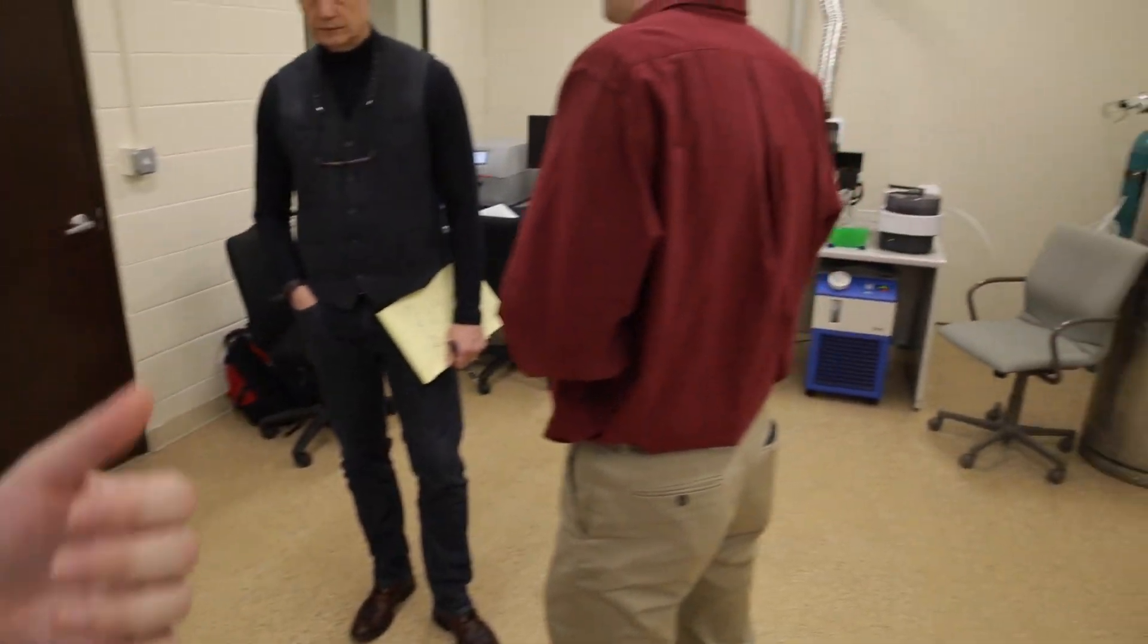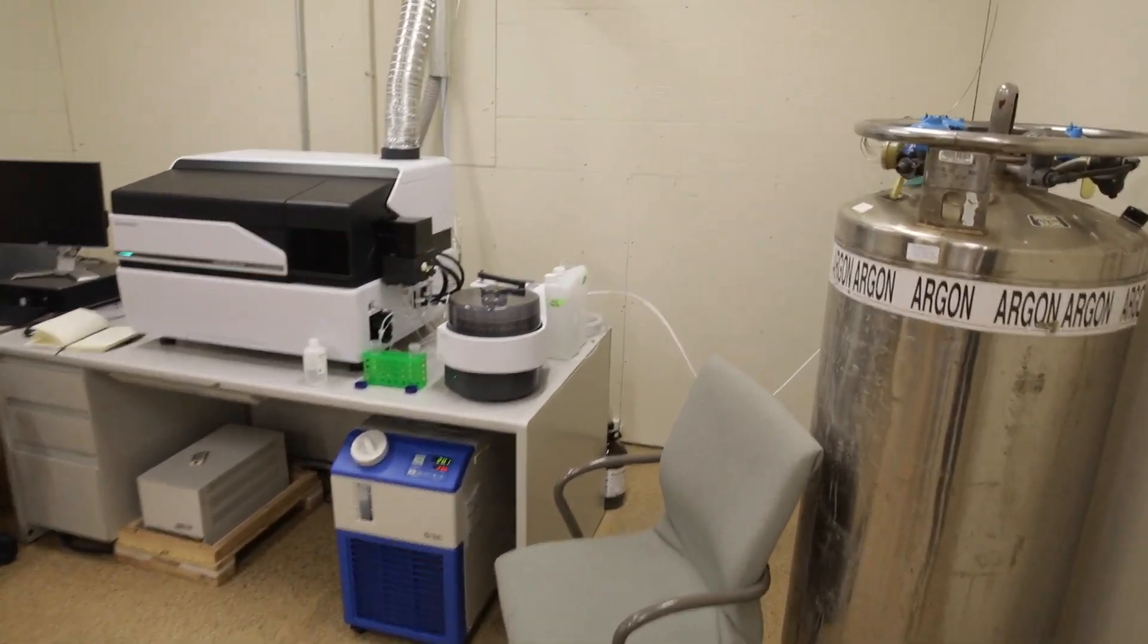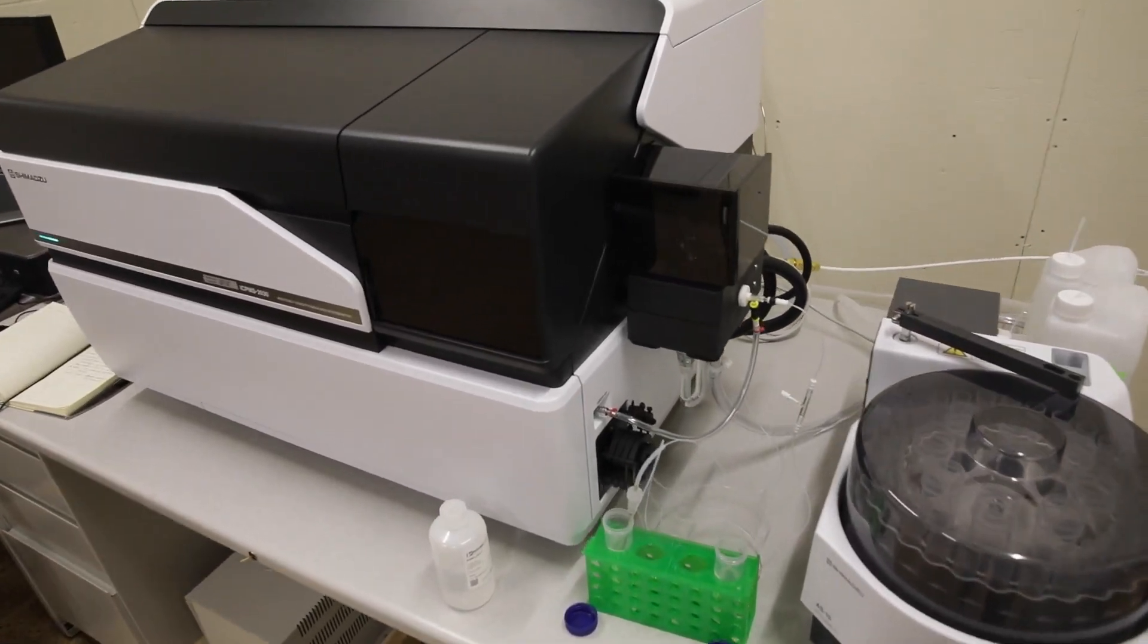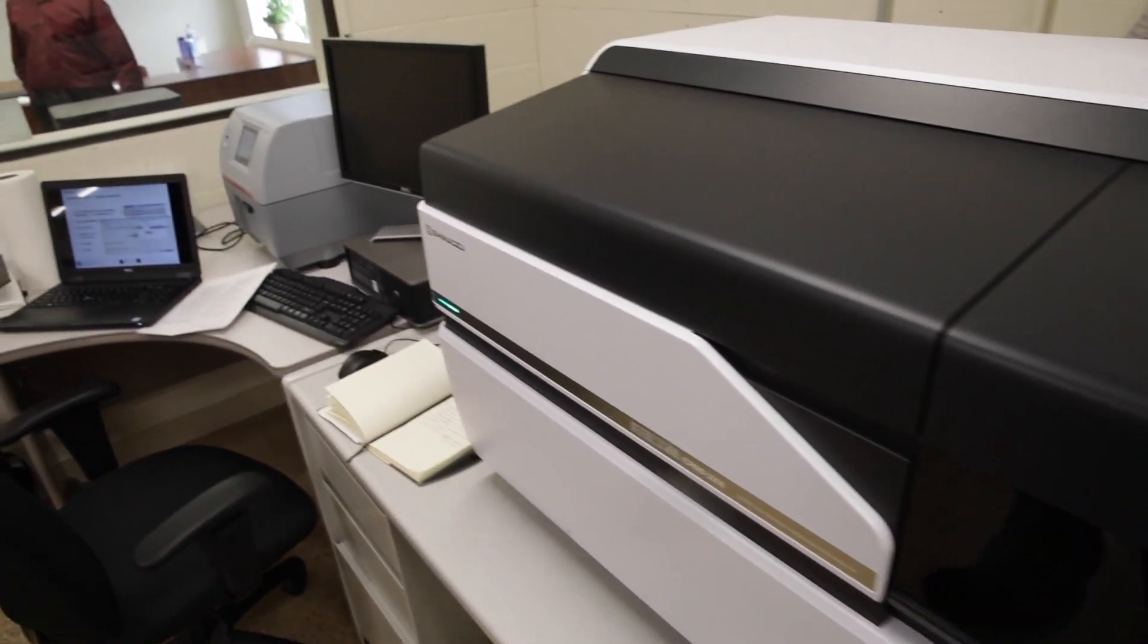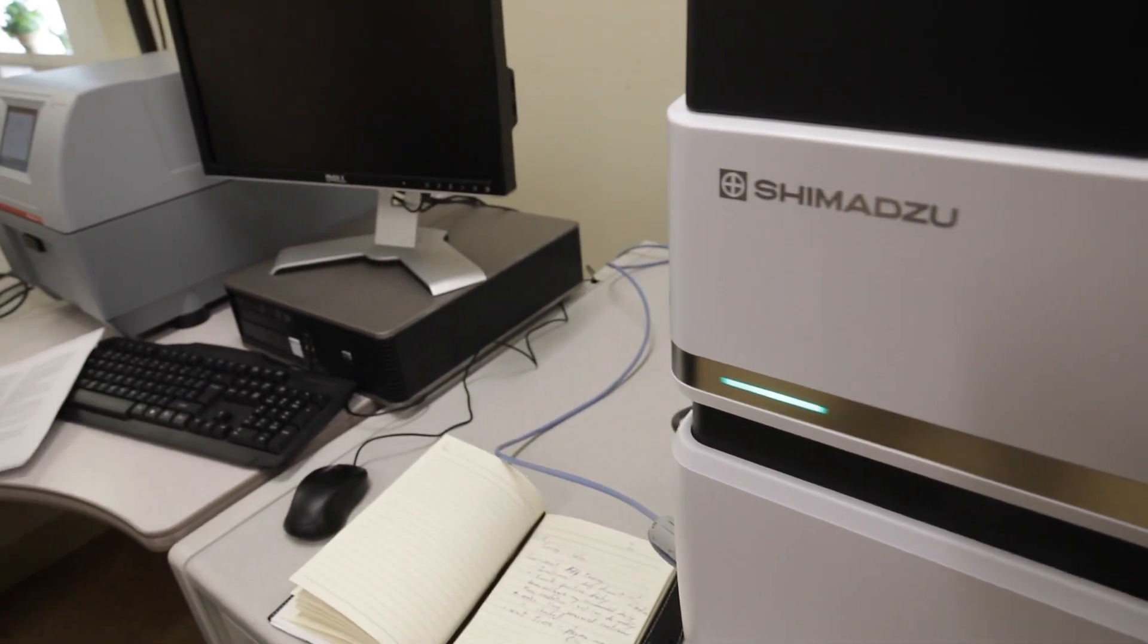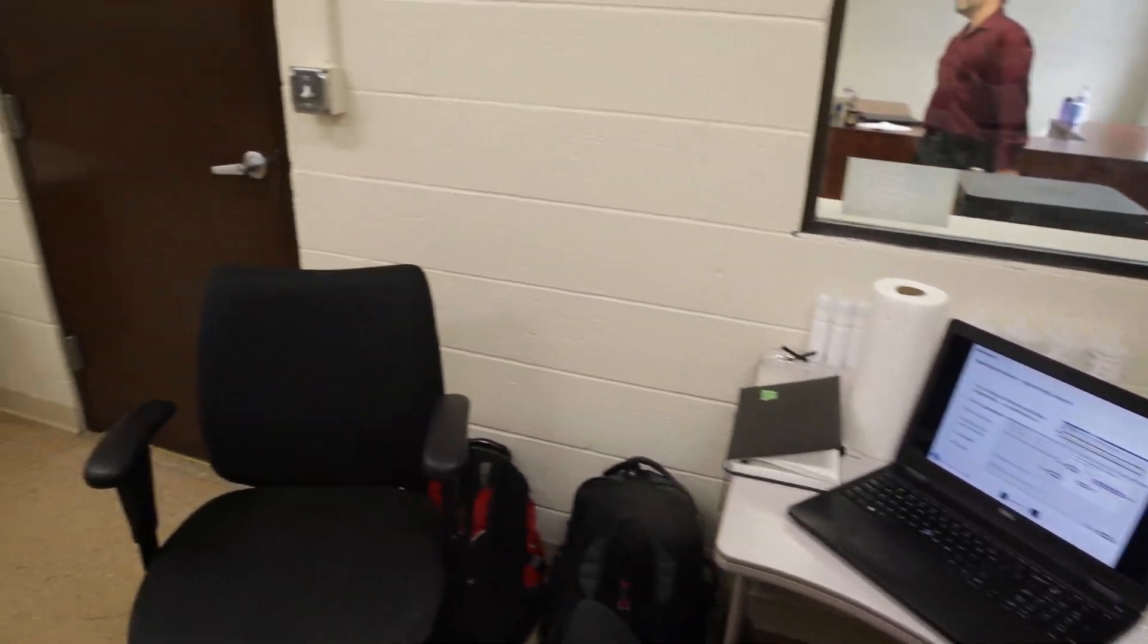Going over to this machine here, this is our ICP-MS. This piece of instrumentation is used to examine heavy metals. We'll be looking for any potential heavy metals, anything hazardous. Things that are common are lead and mercury. Those are the two more prevalent ones that you're likely to see, but hopefully we're not going to be seeing any of that.